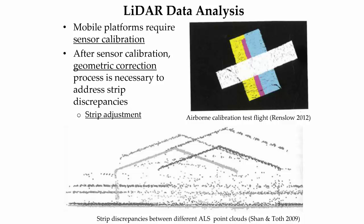The geometric corrections are evaluated through strip adjustments. One common method for calibrating and subsequently adjusting airborne LiDAR data is to fly perpendicular cross-flight strips, as shown in the top image. Fixed, identifiable structures such as houses with peaked roofs, shown in the lower image, provide feedback on any strip discrepancies that may need to be corrected in the strip adjustment process.